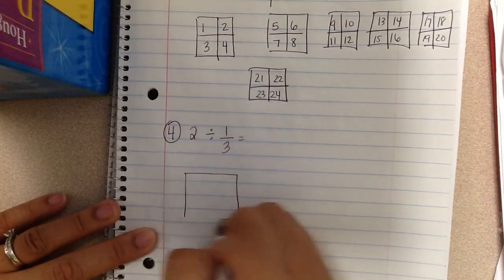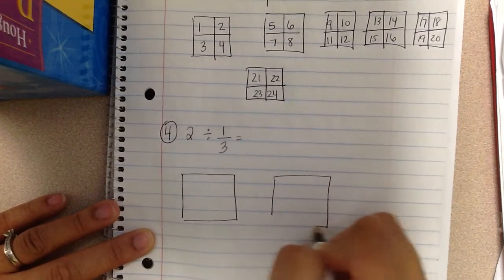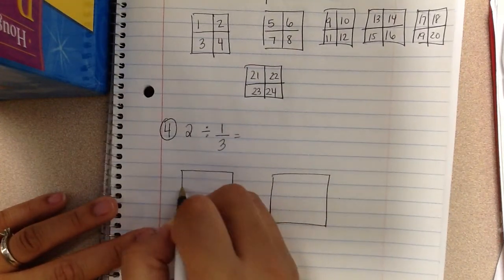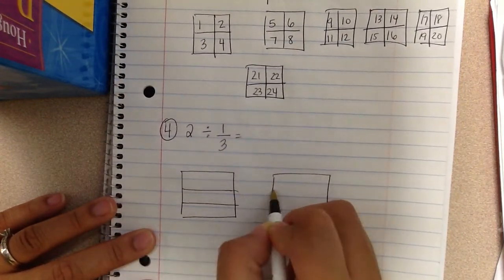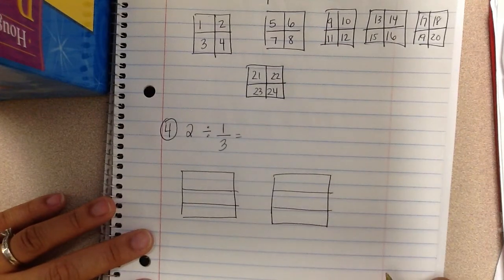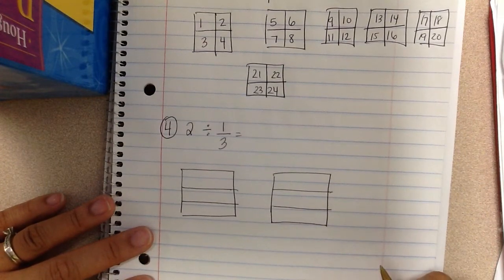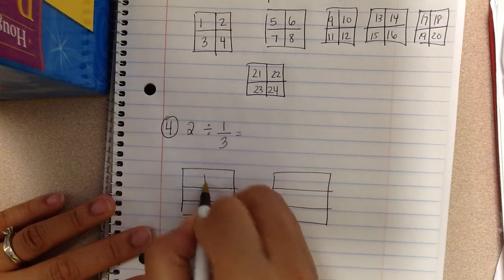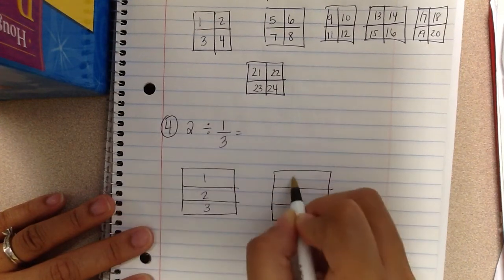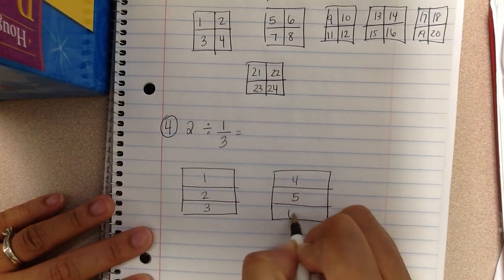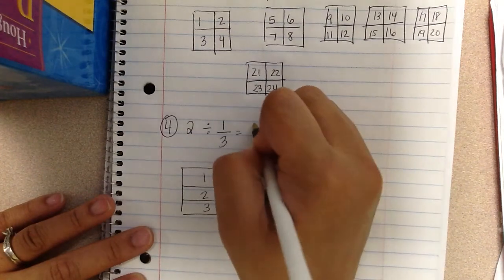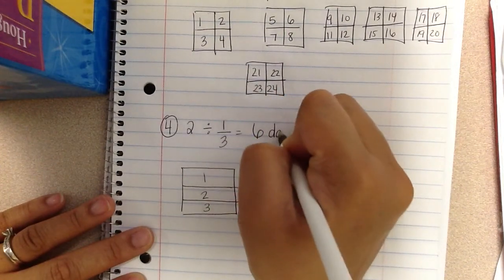So I'm going to take two wholes. I'm going to split it into thirds. Then I'm going to count how many thirds I have: one, two, three, four, five, six. I have six thirds so my answer is six days.